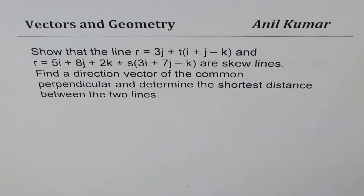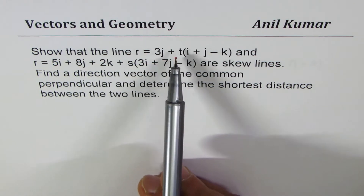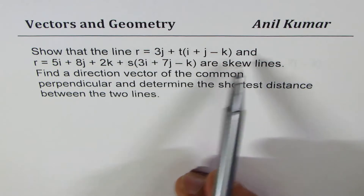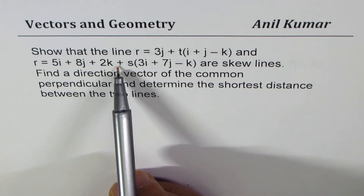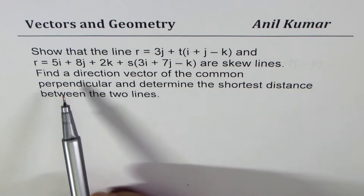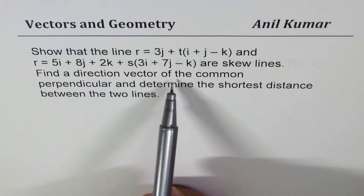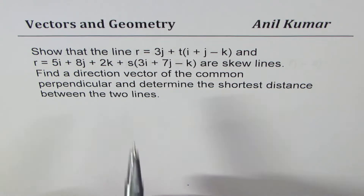I'm Anil Kumar sharing with you solutions of questions sent from my subscriber Raymond, and I hope Raymond you will find them useful. The question here is: show that the line r = 3j + t(i + j - k) and r = 5i + 8j + 2k + s(3i + 7j - k) are skew lines. Find the direction vector of the common perpendicular and determine the shortest distance between the two lines.